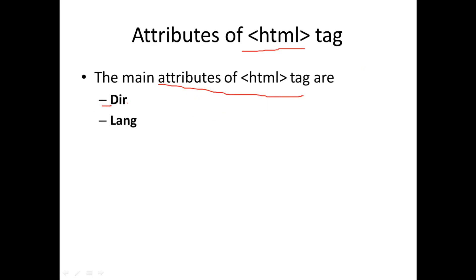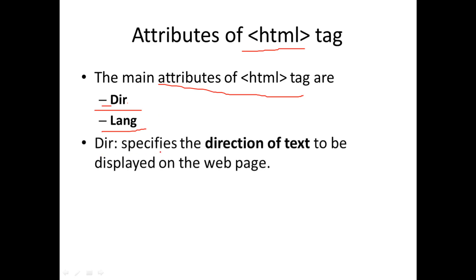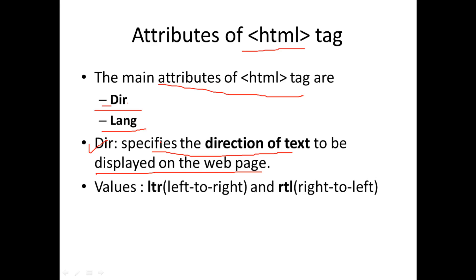There are two main attributes for the HTML tag. The first one is the dir attribute and the second one is the lang attribute. The dir attribute specifies the direction of text to be displayed on the web page.